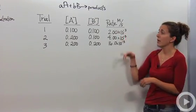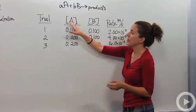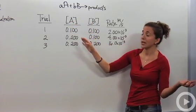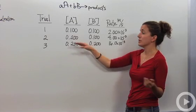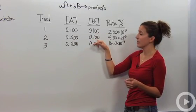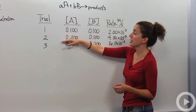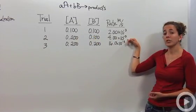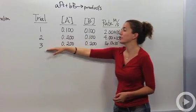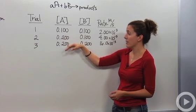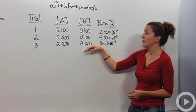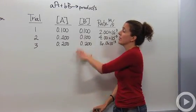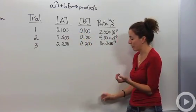I want to see how dependent each reactant is on the rate. If I put more A in, does the reaction go faster? So I keep B the same — that's my constant — and I double the concentration of A, and I notice the rate changes and increases. Then in trial three, I keep A the same and increase the concentration of B to see how much that affects the rate. I'll use all this information to determine the overall rate law.